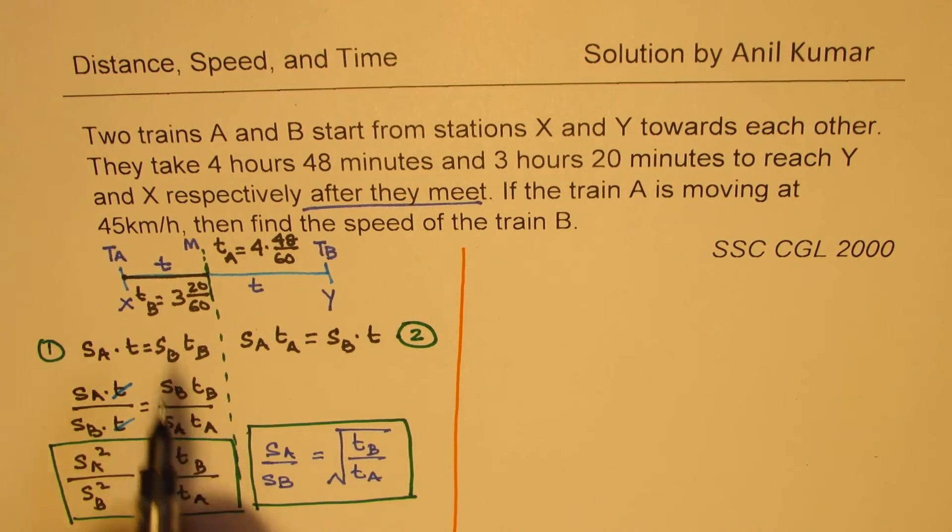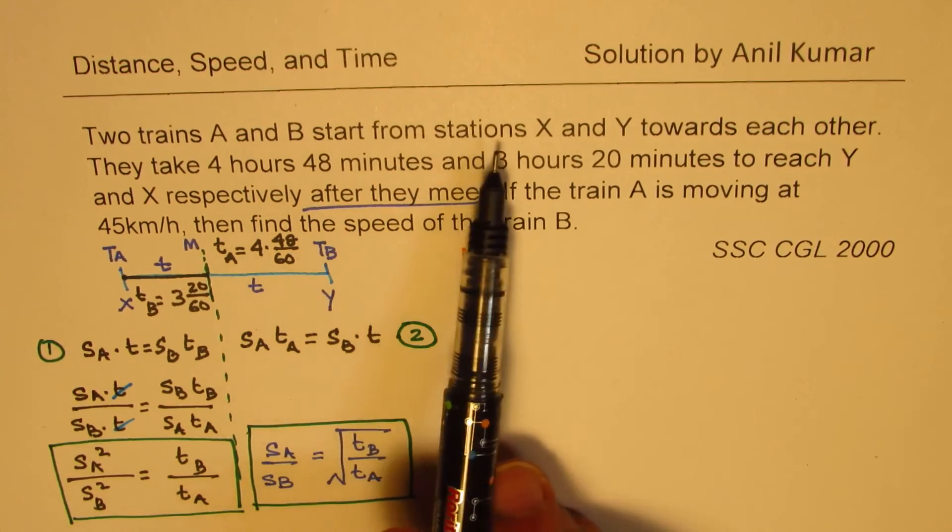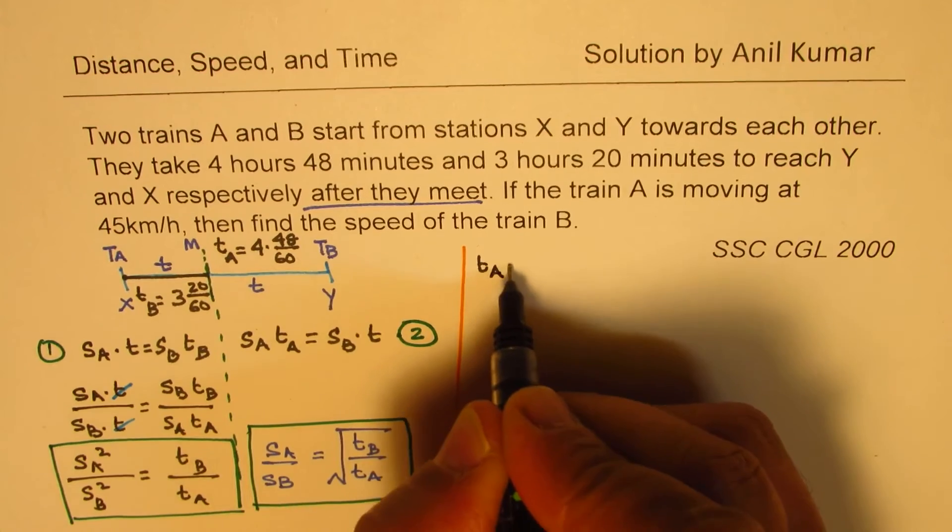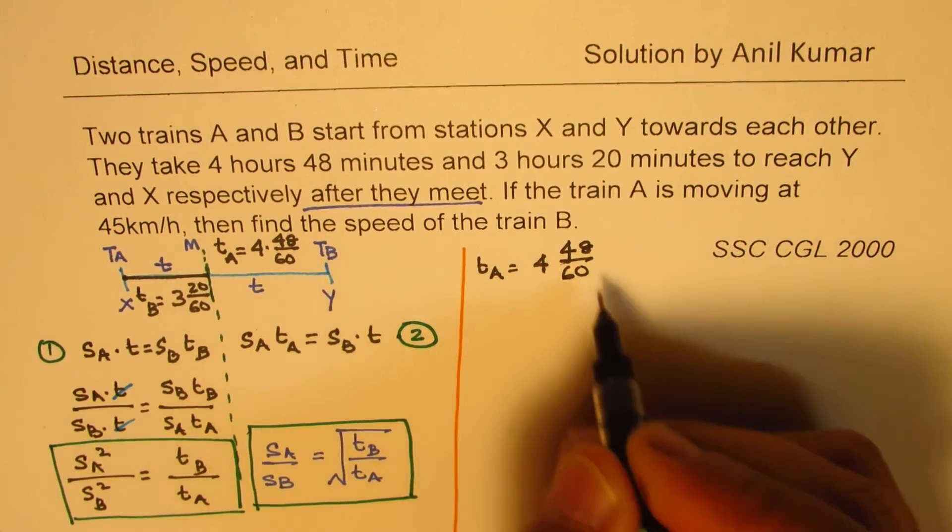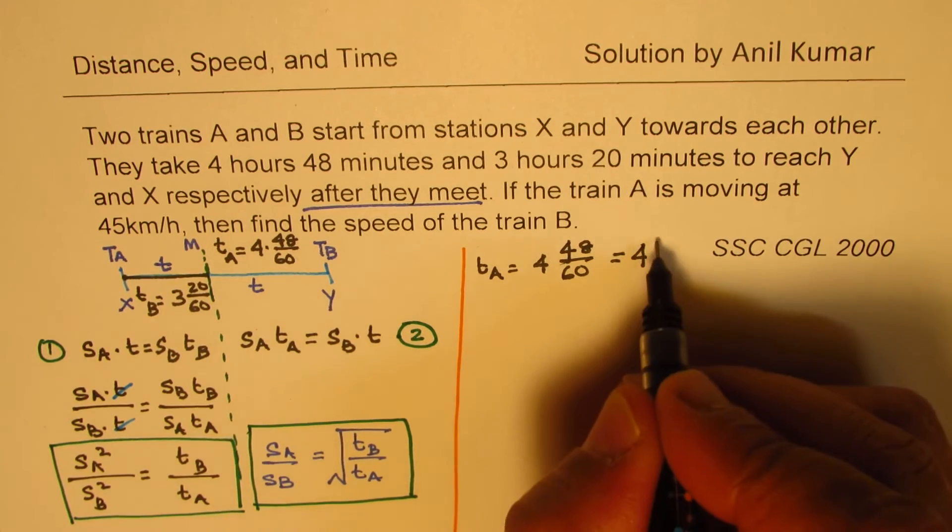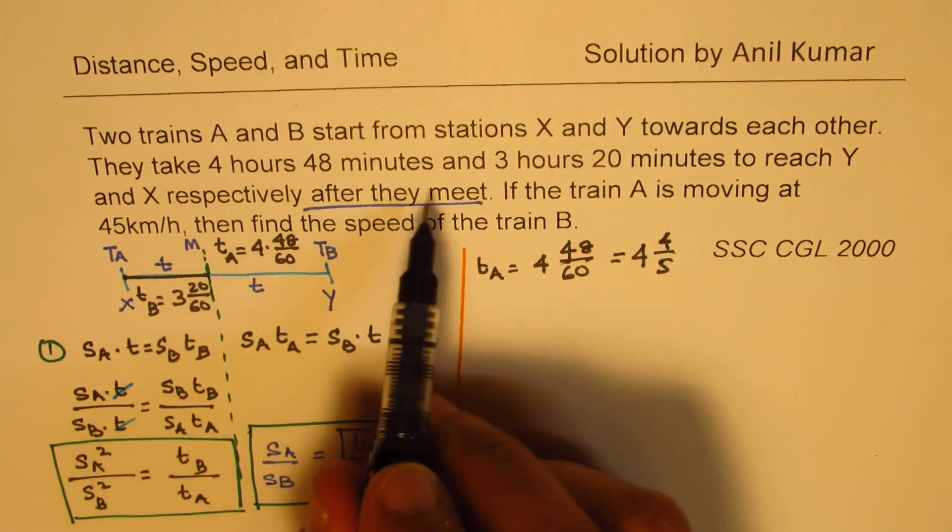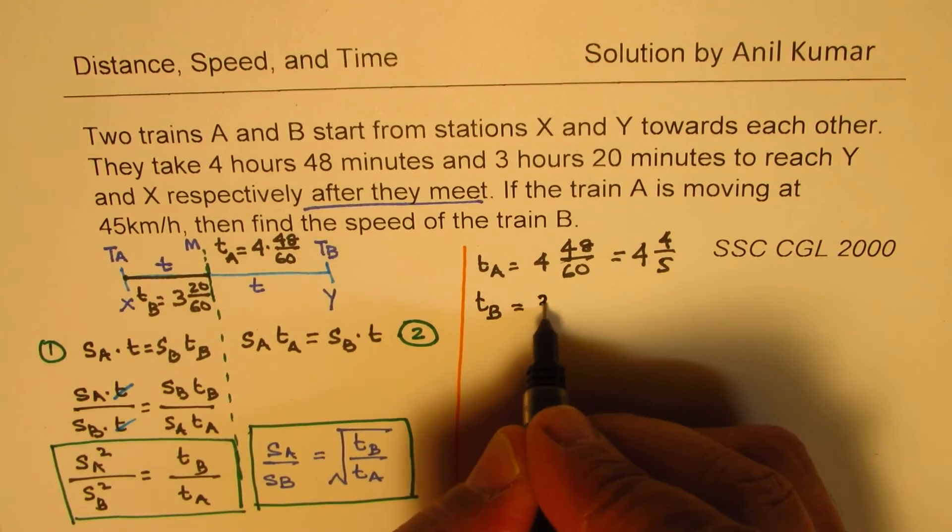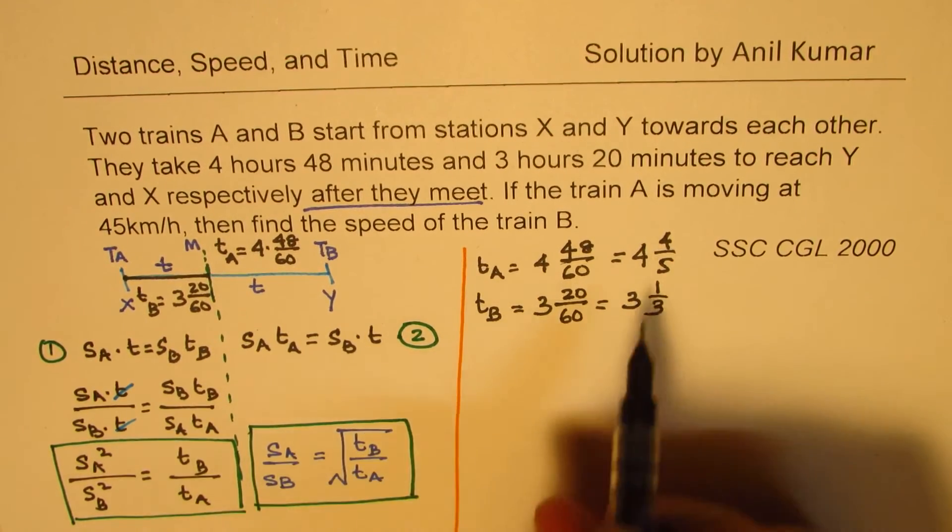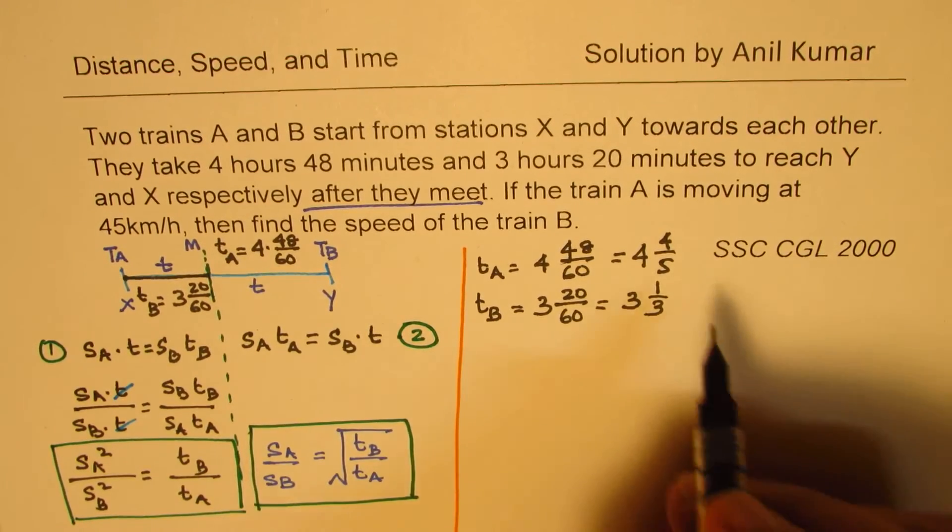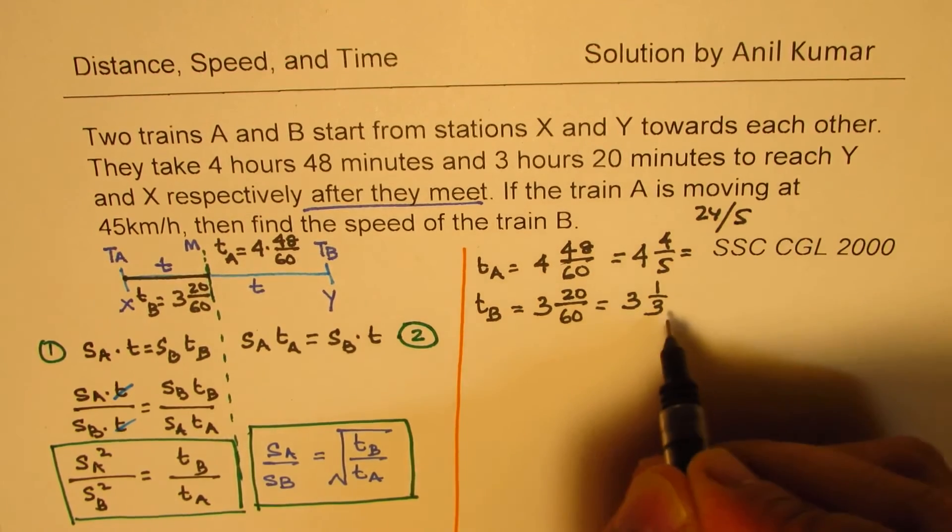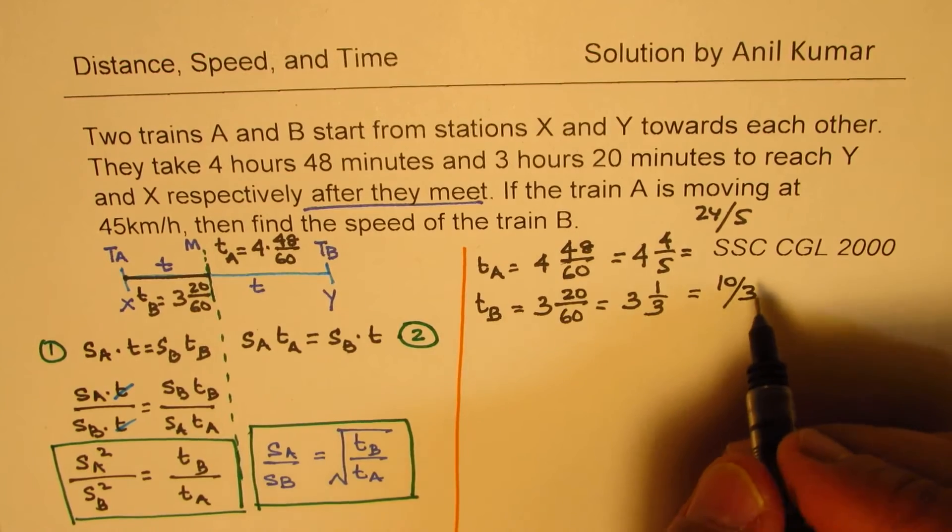Let's get back to our situation. TA is given as 4 hours 48 over 60, which can be simplified to 4 plus 4 over 5. Dividing by 12, we get 24 over 5. For train B, the rest of the journey is completed in 3 hours 20 minutes, which is 20 over 60, so 3 plus 1 over 3, or 10 over 3. This time is in hours.